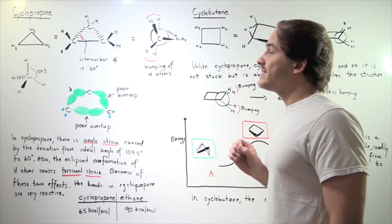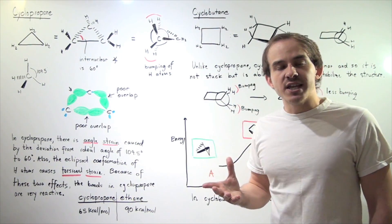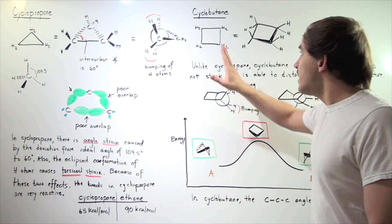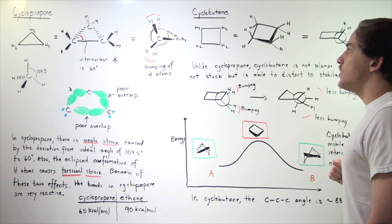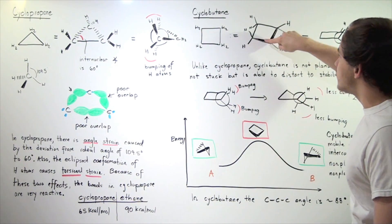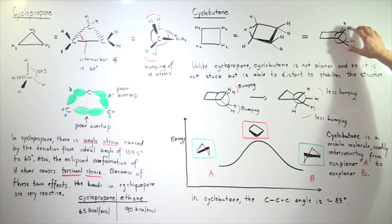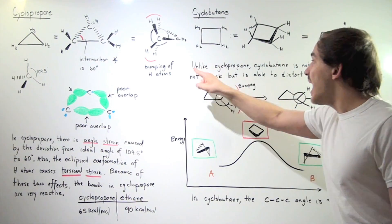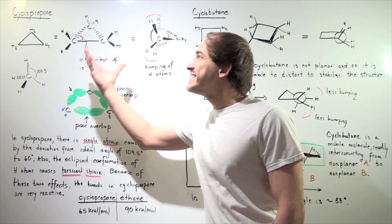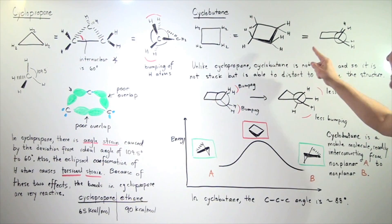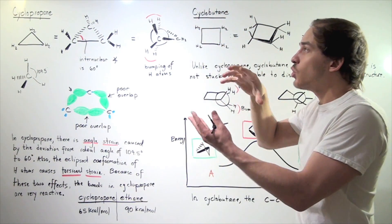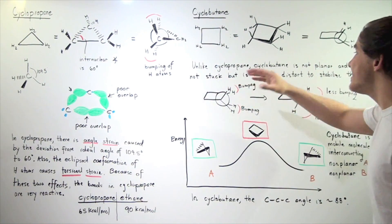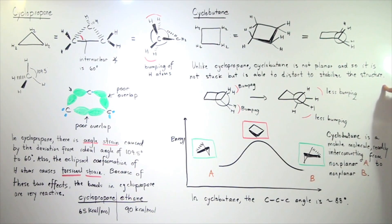The second simplest cycloalkane is cyclobutane, which has one more carbon atom and two more H atoms. We have three depictions: the square, the two carbon-carbon bonds coming out of the board, and the Newman projection. Unlike cyclopropane, which is a static planar molecule, cyclobutane is not planar — it can rotate slightly and distort or pucker to stabilize the structure.